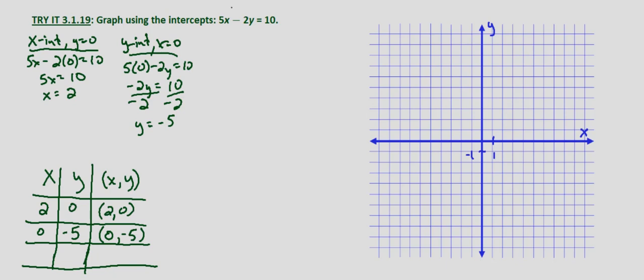So let's go ahead and we'll choose x equals, let's say, 4. So at x equals 4, 5 times 4 minus 2y equals 10. That's 20 minus 2y equals 10. Subtract 20 from both sides and we get negative 2y equals negative 10. Divide both sides by negative 2 and we get y equals 5. So when x equals 4, y equals 5, which gives us the point 4, 5.